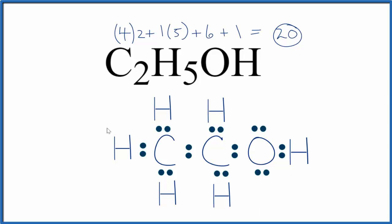And now each hydrogen has two valence electrons. So they're okay. Carbon has eight. This carbon has eight. This oxygen here, it has eight. So this is the Lewis structure for C2H5OH. We've used all 20 valence electrons, and all of the atoms have the right number of electrons around them.